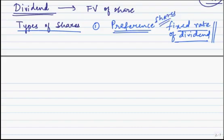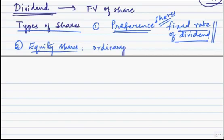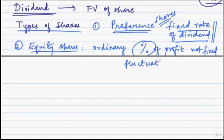The other type of shares are called equity shares, also called ordinary shares. They get a dividend as a percentage of the profit of the company, but that percentage is not fixed — the rate of dividend is fluctuating. So compared to preference shares, equity shares get a fluctuating dividend depending upon the financial status of the company.